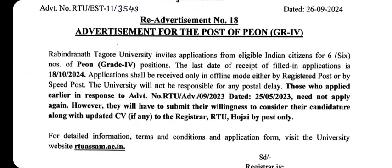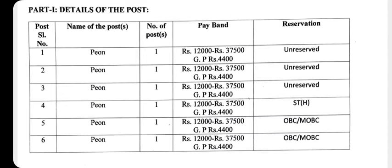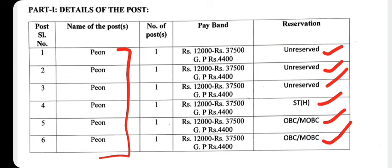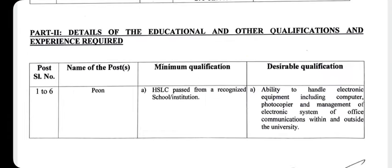Now let's look at Grade 4 post details. The official notice for Grade 4 was published on 27 November 2021. For the peon post, total vacancy details are available — unreserved, ST hills category vacancies. The pay scale is 12,000 to 7,000 plus grade pay of 1,000.